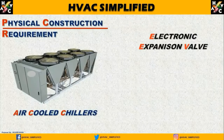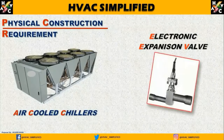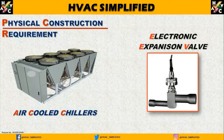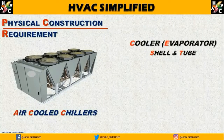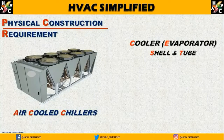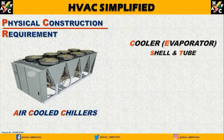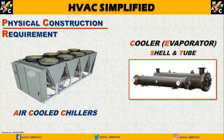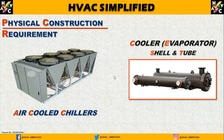Next, electronic expansion valve — electronic expansion valve air-cooled chiller में इस्तेमाल की जाती है। इसके बाद हमारी last major component होती है cooler, यानि evaporator। इसे cooler भी कह सकते हैं, जो की shell and tube evaporator — shell and tube cooler — कहा जाता है, जहाँ पर हमारी actual cooling होती है, refrigerant और chilled water piping के लिए।